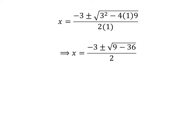Further simplification gives us x = (-3 ± √(9 - 36)) / 2.